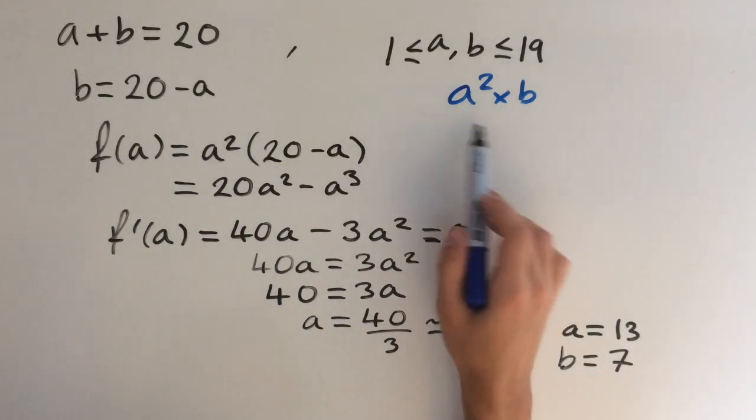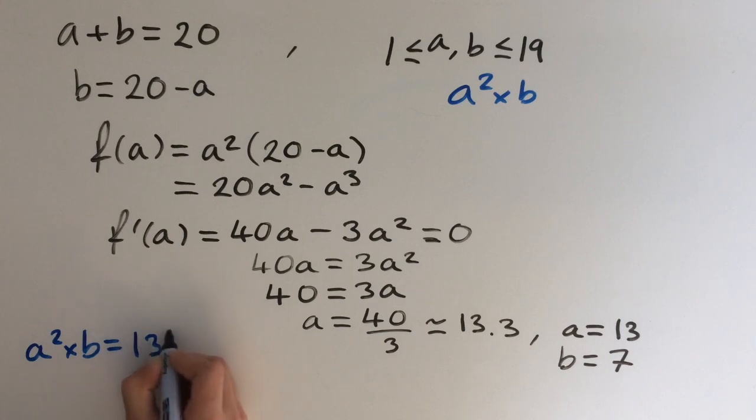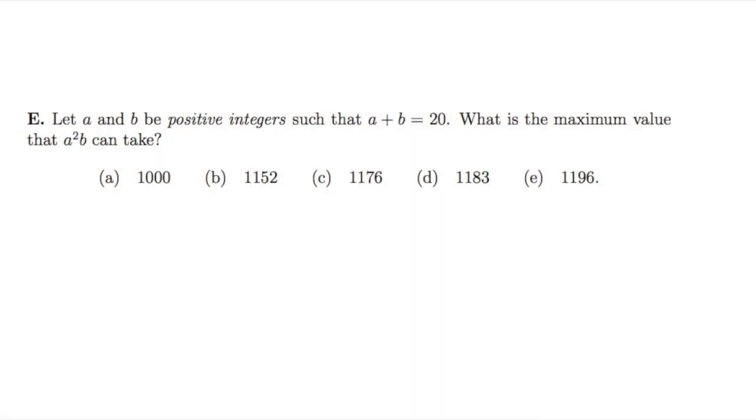Our last step is to actually calculate this value right here. So a squared times b is going to be equal to 13 squared times 7. And this is 169 times 7. And if you do the calculation, you get 1183. Looking back at the question, we see that the correct answer is in fact d.